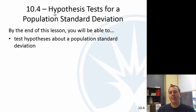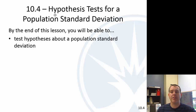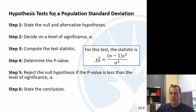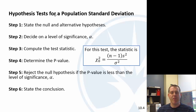Alright, time for our last video on hypothesis testing — or our last type of hypothesis test I should say. We're going to talk about a hypothesis test about the standard deviation. Same process, new test statistic: chi-squared, which should look familiar from chapter 9, where we defined this new variable called the chi-squared variable — and that's going to be our test statistic now.